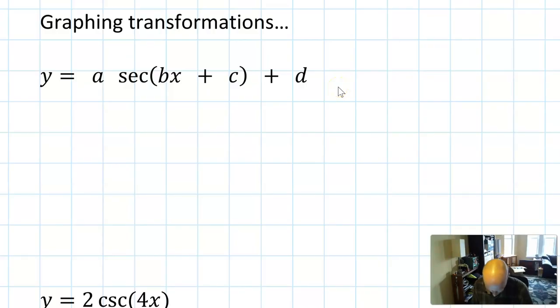The generalized form for a secant or cosecant graph is the same as the generalized form for a normal trig graph. I did secant here but this would also be true for cosecant. Let's run through as a matter of review what the different items do.